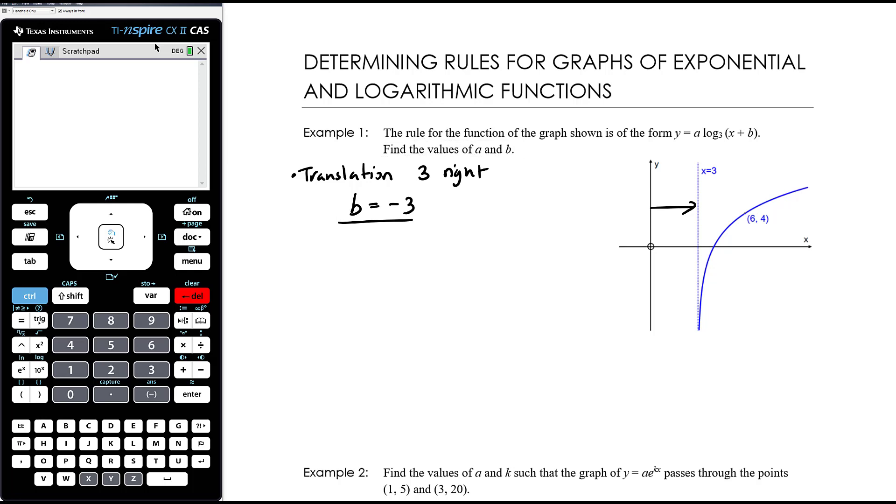OK, so that implies that the equation is y equals a times log base 3 of x minus 3. And then we have a point that we can use to find a. OK, so we're going to sub the point 6, 4, which is when x equals 6, y equals 4. And so that is 4 equals a times log base 3 of 3. And remember from our earlier log videos, log base 3 of 3 is just 1. And so therefore a equals 4. So we've found the values of a and b.